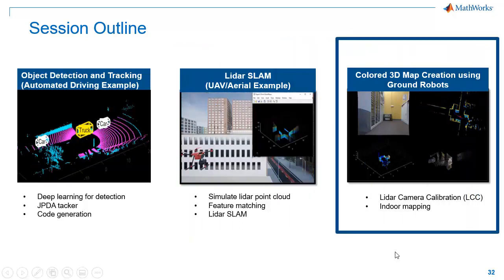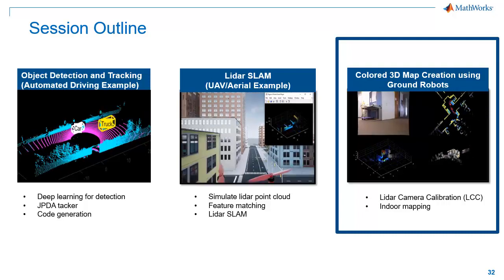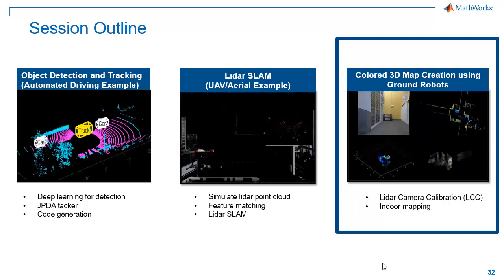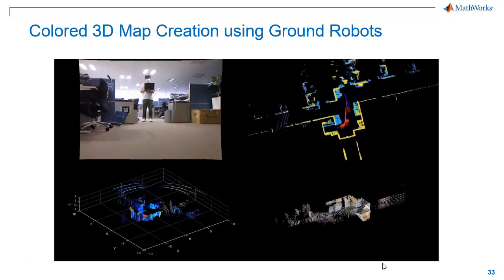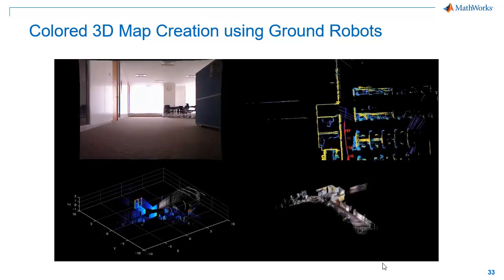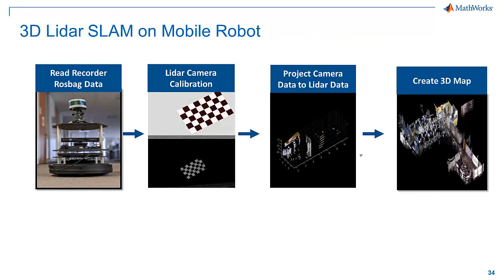Now let's move on to our final workflow example which is to create a colored 3D map of an office arena using a ground robot. Here we'll perform LiDAR camera calibration to combine camera data with LiDAR data. We'll then use these colored point clouds to create the 3D map of the arena. To create this demo, we ran a TurtleBot in one of our office arenas. We have collected camera, LiDAR, and odometry data into a ROS bag. We use this data to create a colored 3D map of our arena. Our workflow starts with reading LiDAR and camera data from the recorded ROS bag, then using checkerboard images and corresponding point clouds to do LiDAR camera calibration, then projecting camera data onto LiDAR data, and finally using the colored point cloud to create a colored map of our office environment.